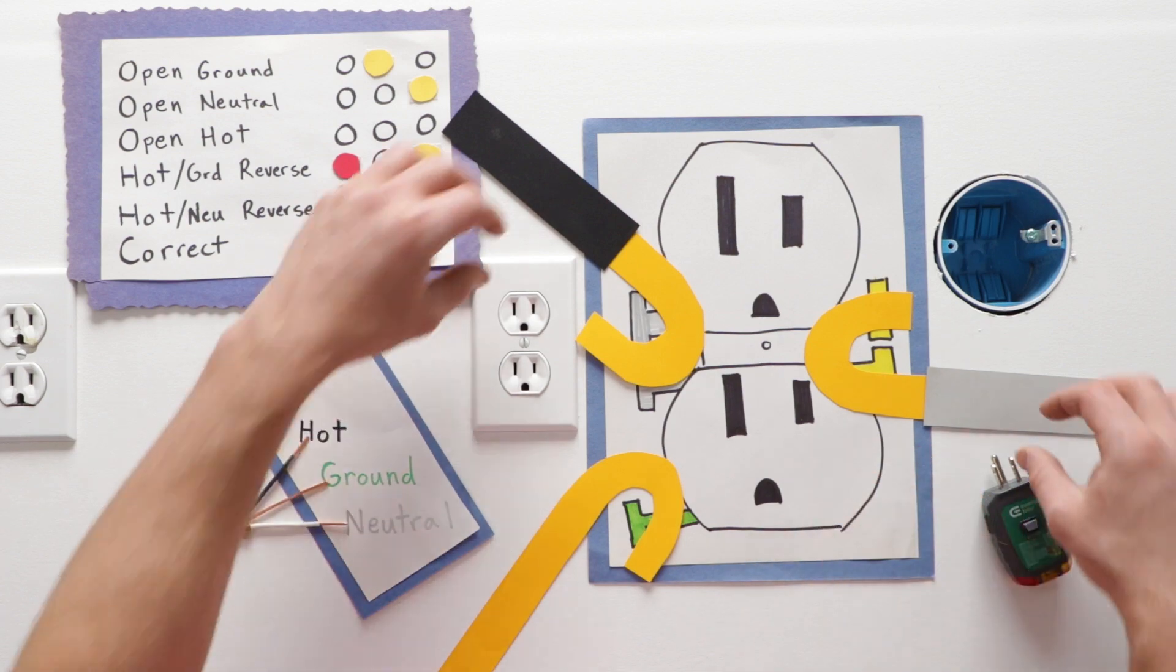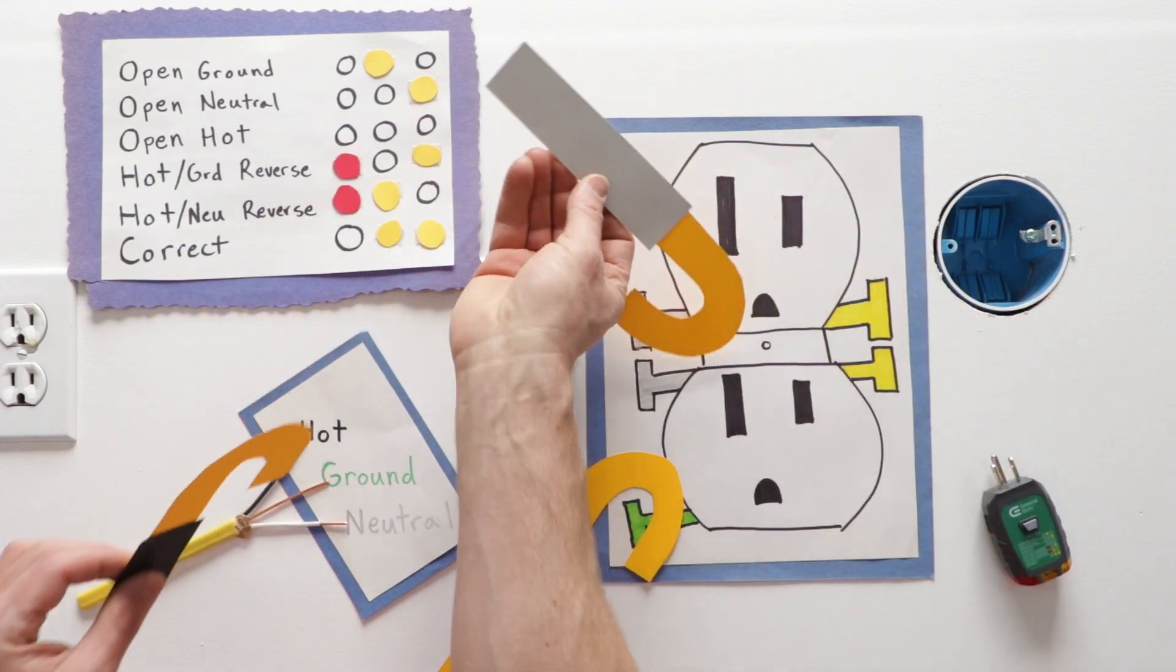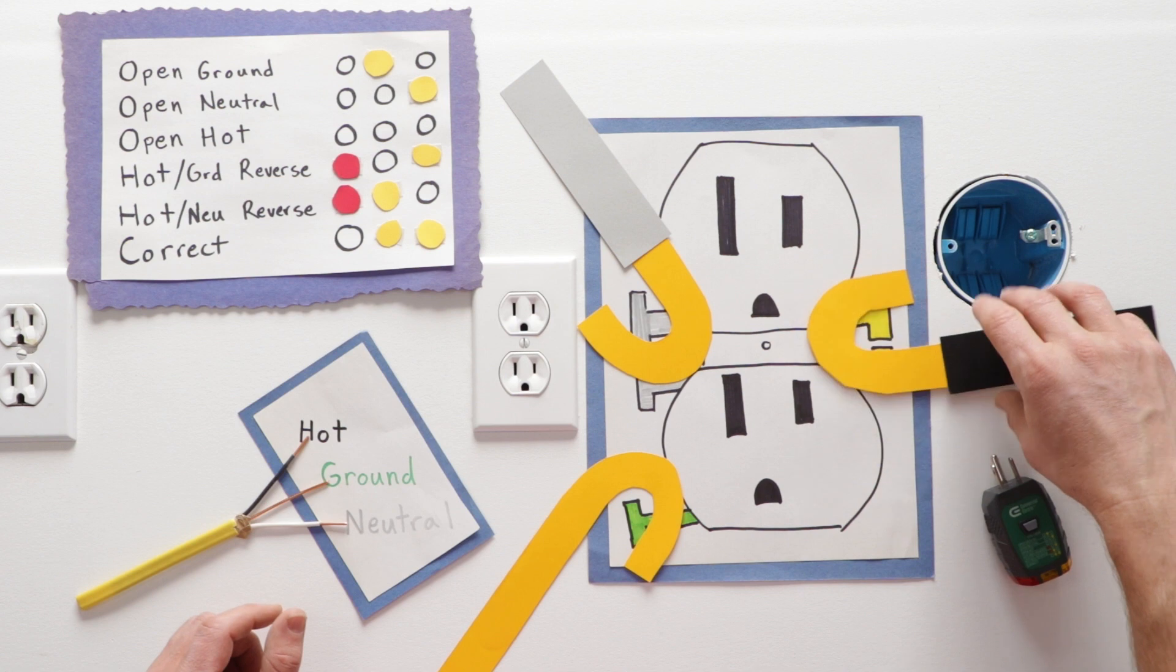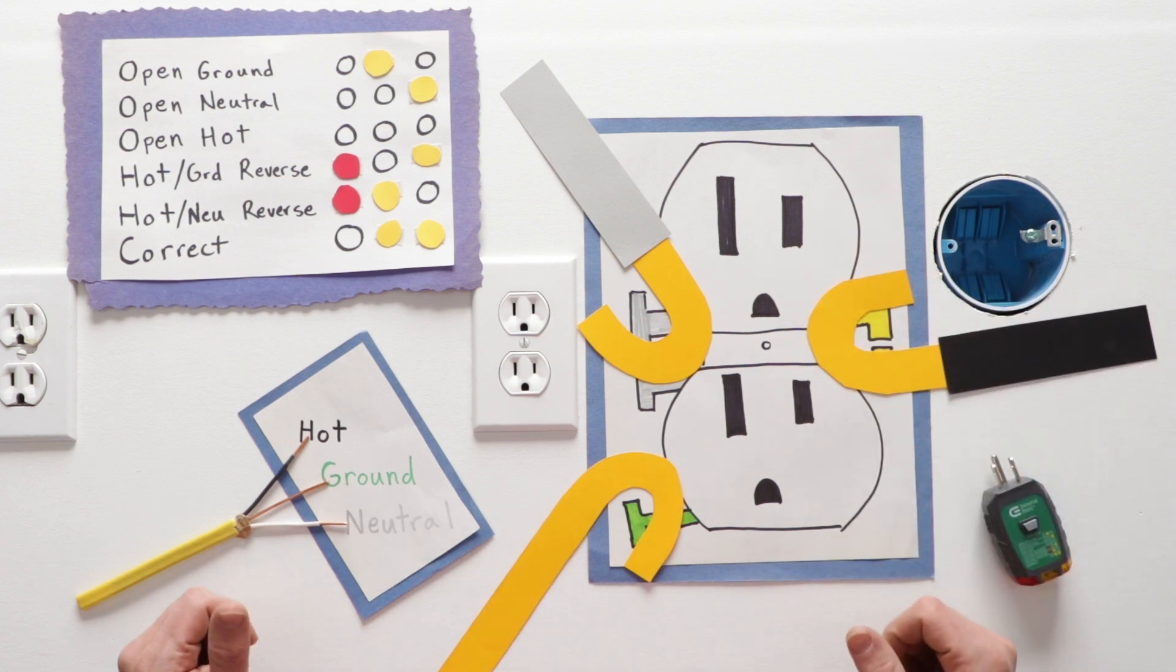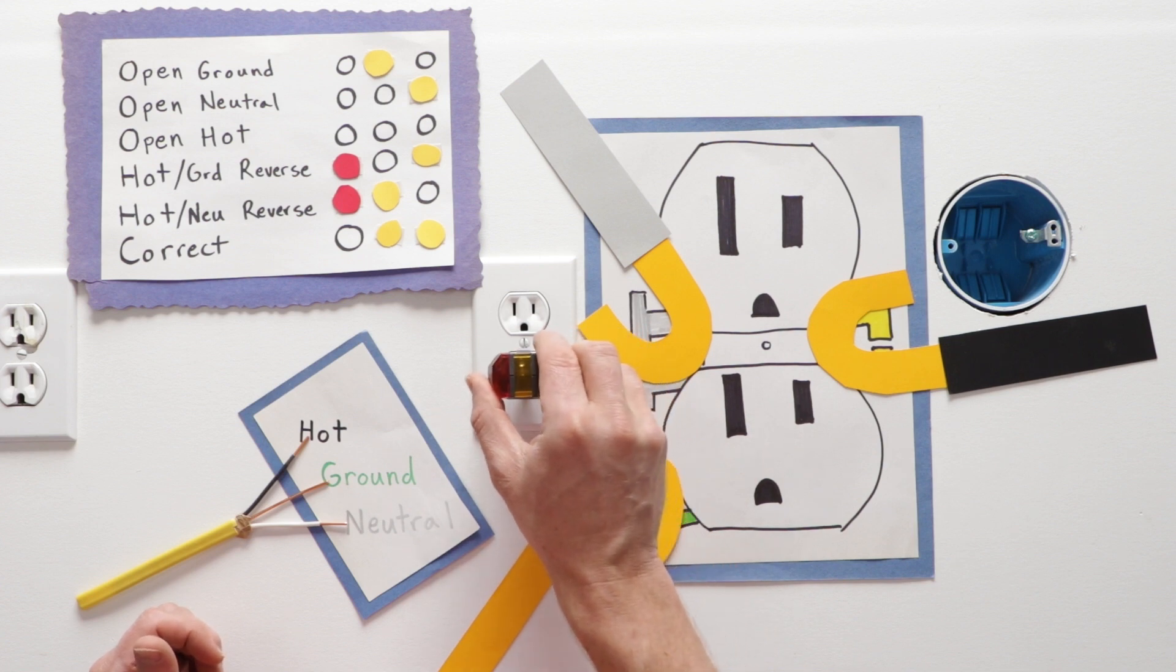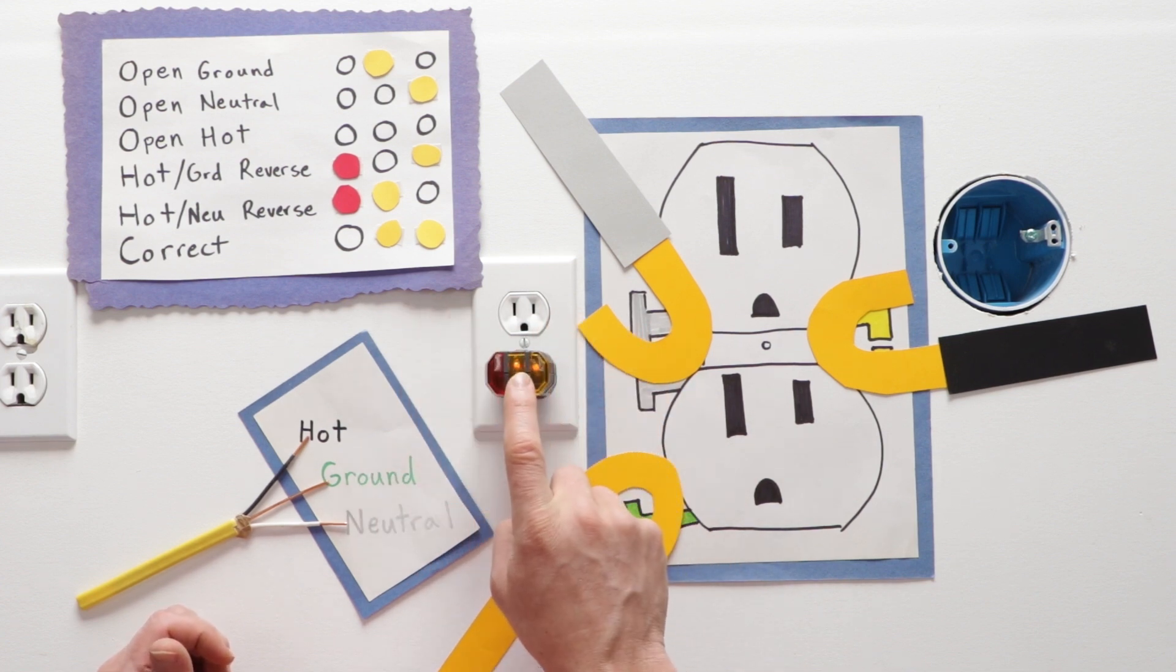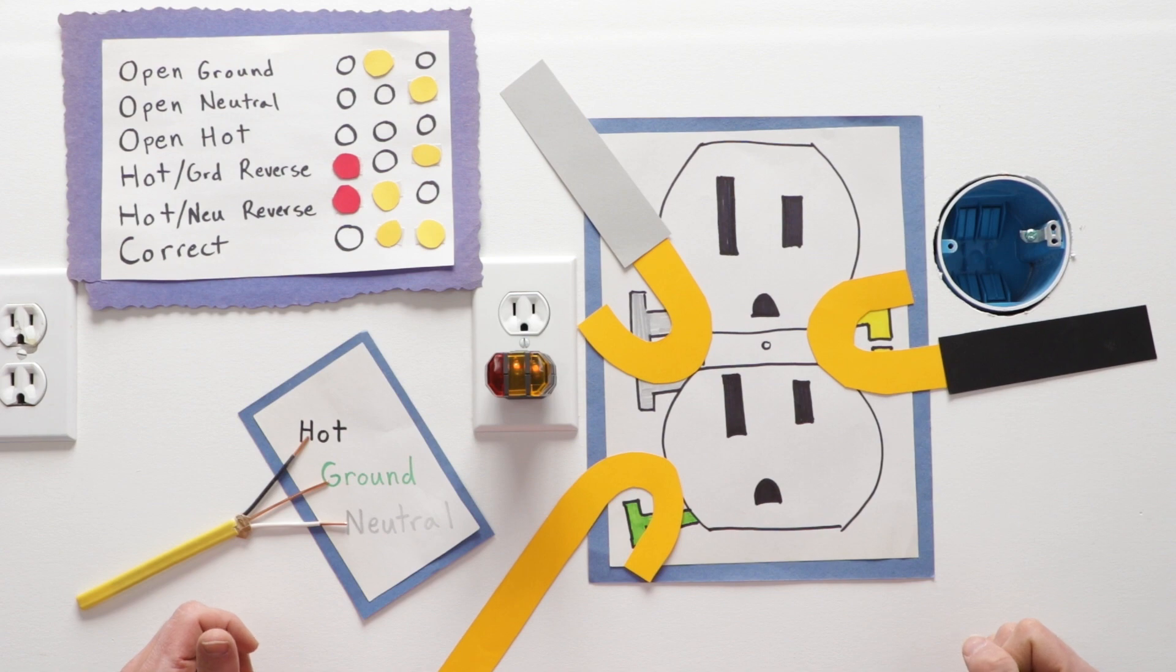So what we want to make sure is that your white, black and bare wires are all connected to their proper screws. And that when you plug in your receptacle tester, you get a reading that indicates it is wired correctly.